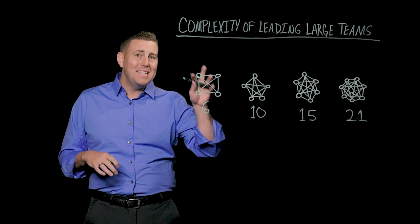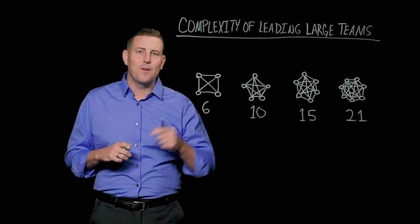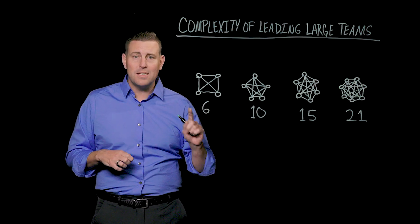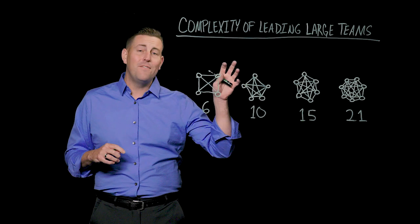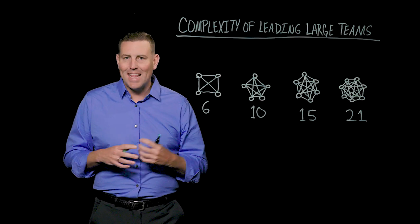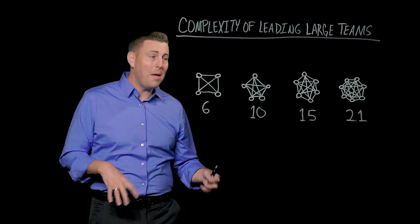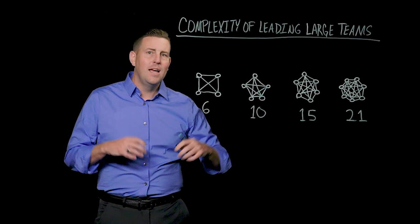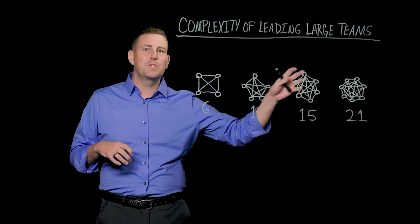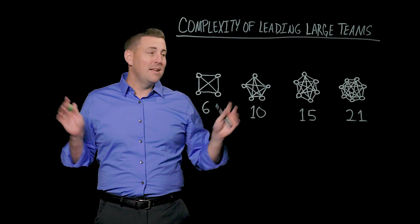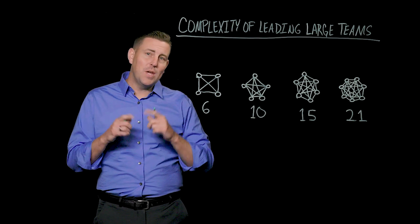If you have a team of four people, there are actually six different lines of communication. If you add just one more person to that team, that team of five now has 10 lines of communication. Six people on your team means 15 lines of communication, and seven people actually equals 21 lines of communication. This isn't a math lesson. I'm not going to go any further. You get the idea.